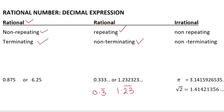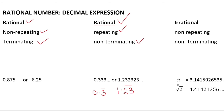If a decimal is non-terminating and non-repeating, then it is an irrational number. Irrational numbers have one possibility: non-repeating, non-terminating decimals. An example is the pi value — the approximate value of pi is 3.14, but the actual value is 3.1415926535, which is non-terminating and non-repeating.